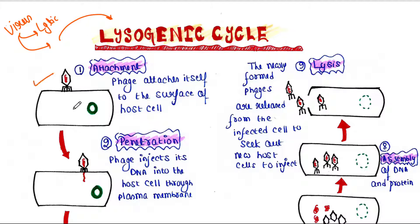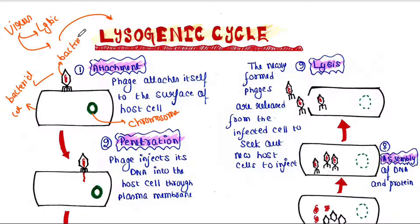Here is the first step. This is the bacterial cell, or you can say this is the host cell, and it has the chromosome — the bacterial chromosome. And here is our virus, the bacteriophage, which attacks bacteria. This bacteriophage has two parts: it has the DNA and it has the protein coat which surrounds the DNA.